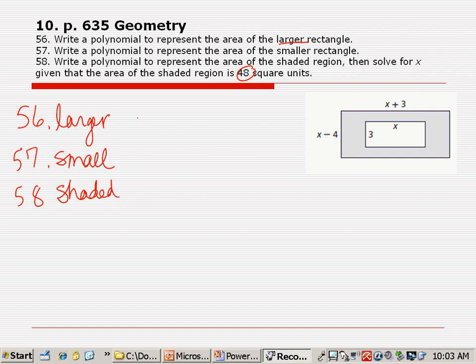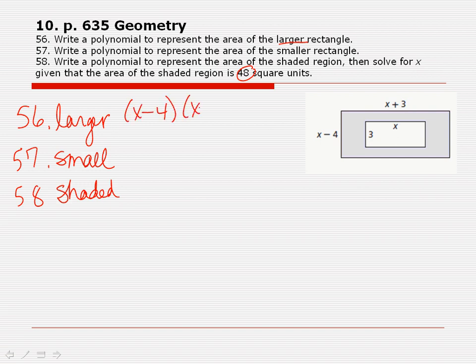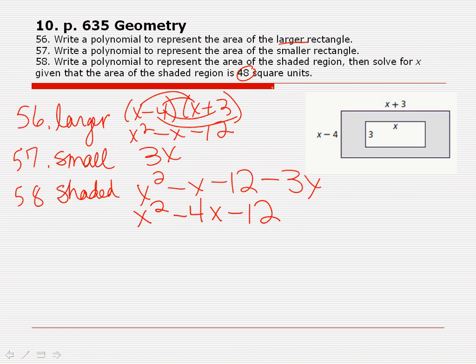Alright. The large rectangle is going to be x minus 4 times x plus 3, which is x squared minus x minus 12. You have to distribute, FOIL, all that business. Is that the area? That's the area of the larger. Okay. The little one is what? 3x. Now I have to find the area of the shaded part. So I'm going to do x squared minus x minus 12. And then what do I do with the 3x? Subtract 3x. So that gives me x squared minus 4x minus 12. Then it tells me that the area of the shaded region is 48. So what do I let it equal? Equal 48. Again, do you see how we had to do something to the left side of the equation before we could go on? Now I have to move the 48.